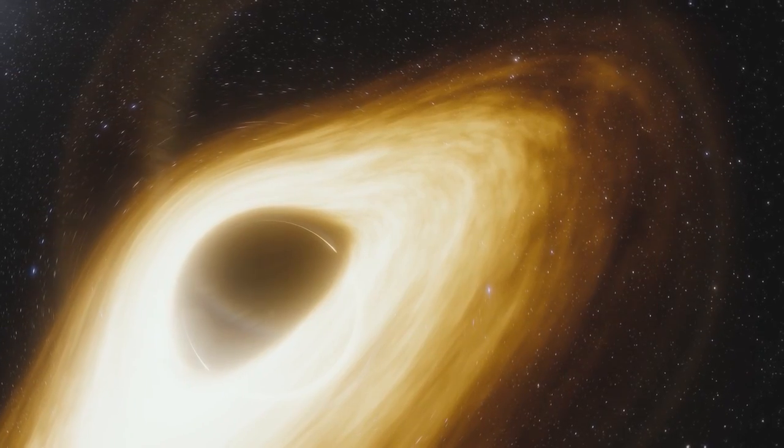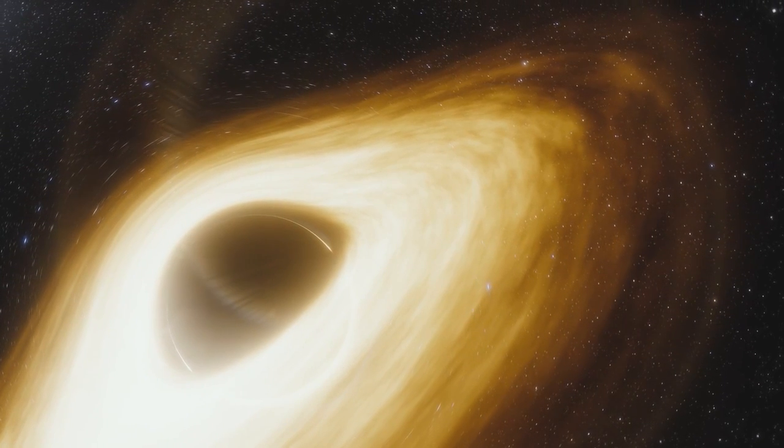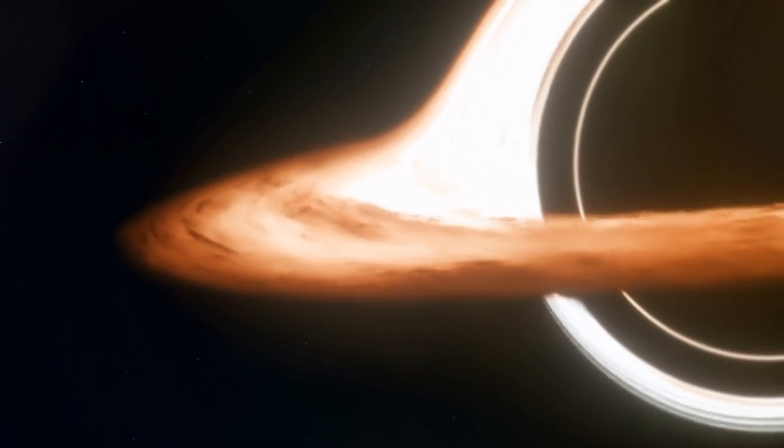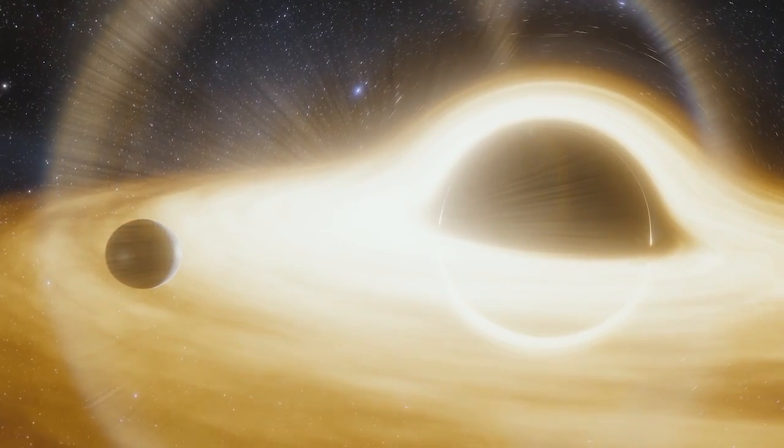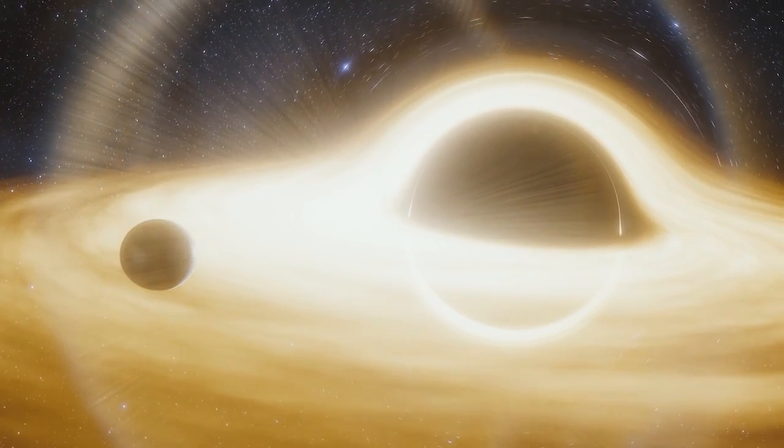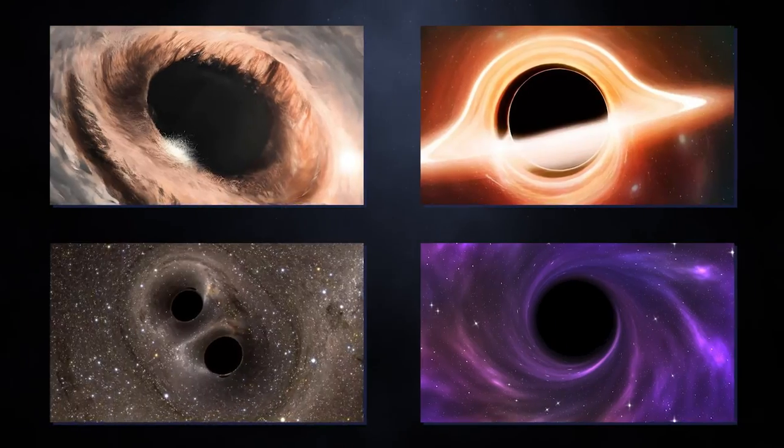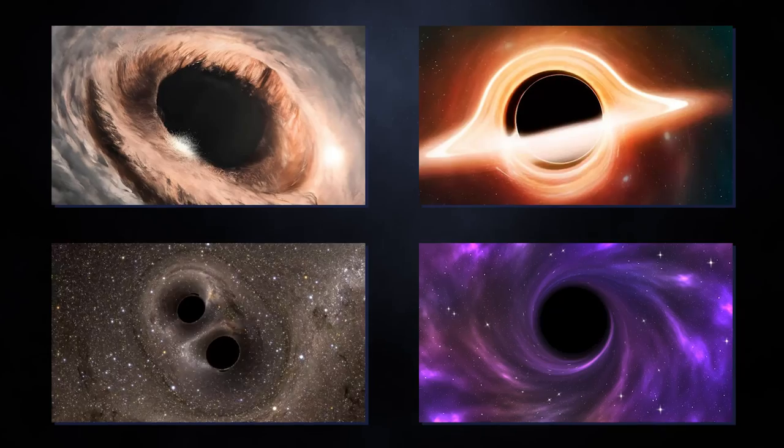The event horizon is a boundary around a black hole beyond which nothing, including light, can escape its gravitational pull. Once an object crosses the event horizon, it is said to have entered the black hole, and its fate is sealed. There are different types of black holes based on their mass and origin.